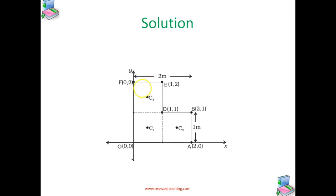C1, C2, C3 are the centers of these 3 squares in this L shape, each of side length 1 meter. The mass of each square is 1 kg since the lamina is uniform. The centers of mass C1, C2, and C3 are by symmetry their geometric centers, with coordinates (1/2, 1/2), (3/2, 1/2), and (1/2, 3/2) respectively.